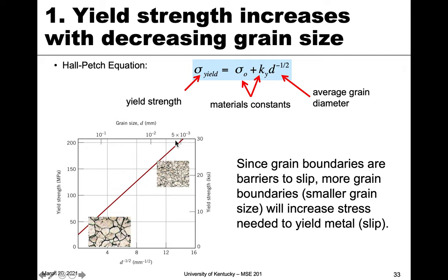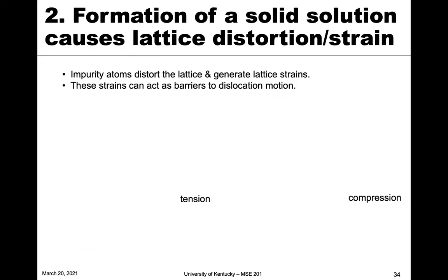If we plot yield strength on the y-axis against d to the minus one-half, the relationship is linear. Grain size increases to the left and decreases to the right. On the left, large grain size corresponds to lower yield strength; on the right, smaller grain size gives higher yield strength. In summary, grain boundaries are barriers to slip, more grain boundaries from smaller grain size increases the yield stress, and so decreasing grain size is a way to strengthen a material.